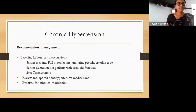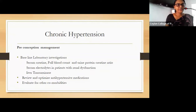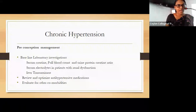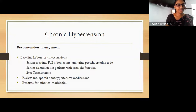When managing a patient with chronic hypertension, arrange preconception management including baseline laboratory investigations: serum creatinine, full blood count, and urine protein-creatinine ratio. If the patient has renal dysfunction, arrange serum electrolytes and liver transaminases as baseline. Review and optimize antihypertensive medication before conception — if the patient is on ACE inhibitors or angiotensin receptor blockers, change to medication compatible with pregnancy. Evaluate for comorbidities like diabetes mellitus, dyslipidemia, chronic kidney disease, and ischemic heart disease.